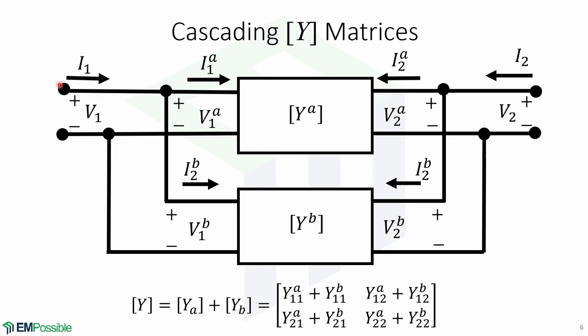Here you can see that we still have the current I1, the voltage V1, the current I2, the voltage V2, and we also have individual voltages and individual currents for each of the two-port networks.